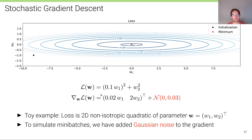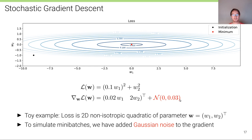The gradient of this function is computed by differentiating with respect to w1 and w2. To simulate the stochastic process of mini-batches, a small amount of noise has been added to the gradient in all the following visualizations, simulating the noisy gradient of SGD over mini-batches.